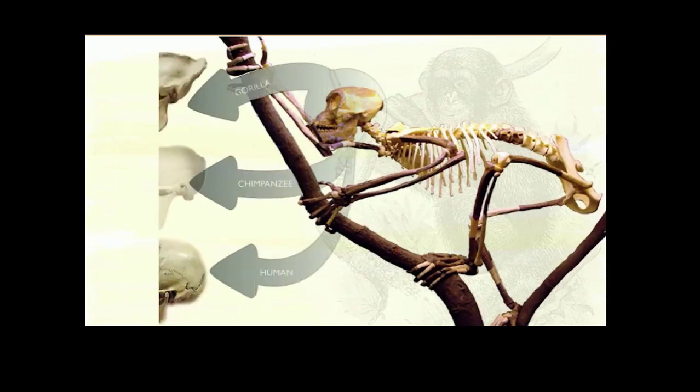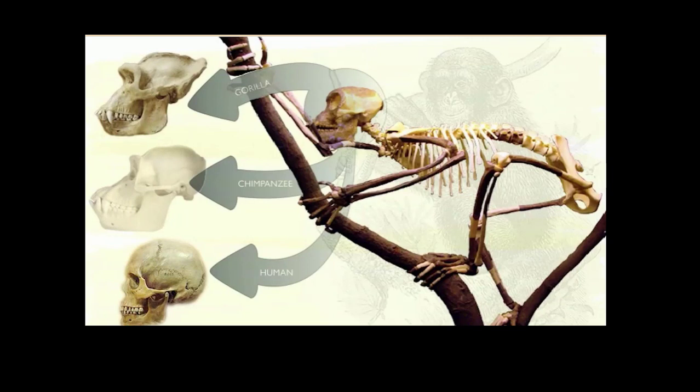Evolutionary change is not linear. It looks more like the branches of a tree. Humans did not evolve from modern apes. Rather, humans and apes share a common ancestor. Our closest living relative, the chimpanzee, is as different from this common ancestor as we are.